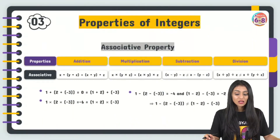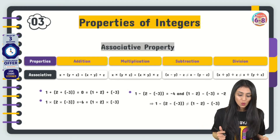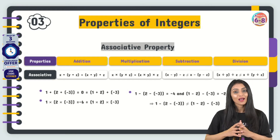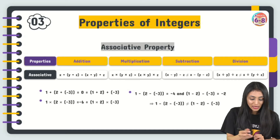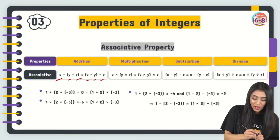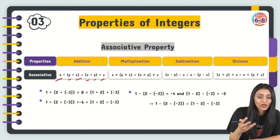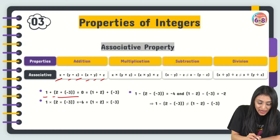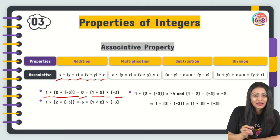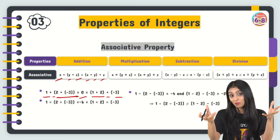The associative property of addition and multiplication states that the grouping of numbers doesn't matter — the result will be the same. For addition: x + (y + z) = (x + y) + z. Example using 1, 2, and −3: 1 + (2 + (−3)) = 1 + (−1) = 0, and (1 + 2) + (−3) = 3 + (−3) = 0. Both give the same result, so changing the parentheses doesn't matter for addition.